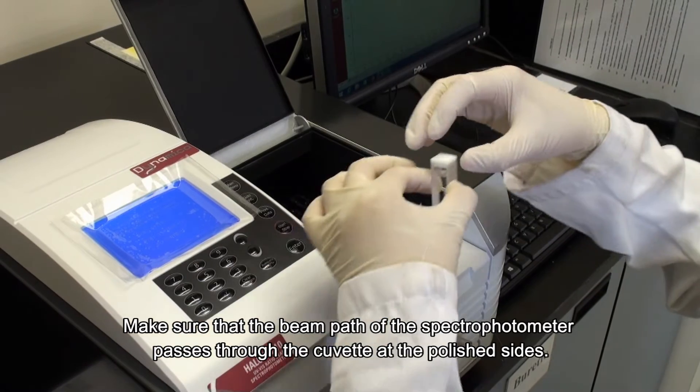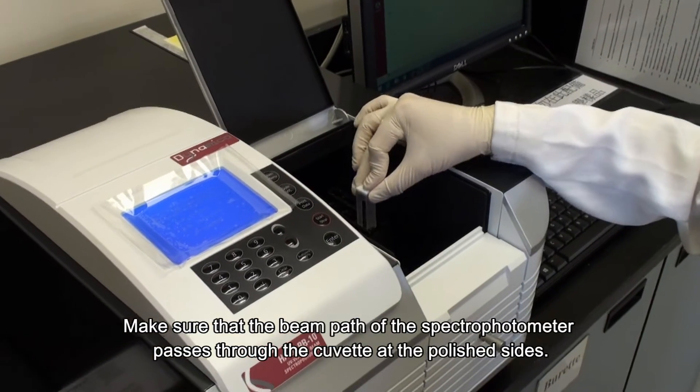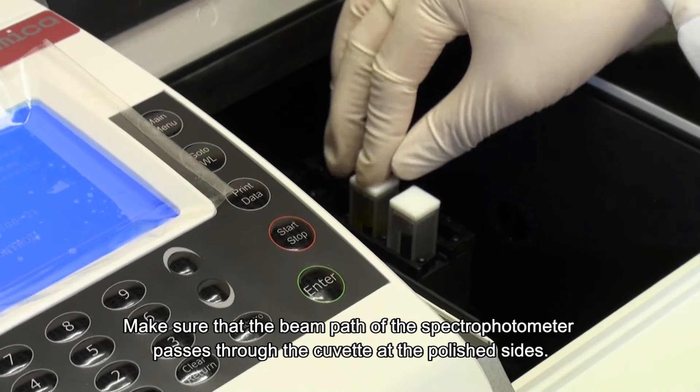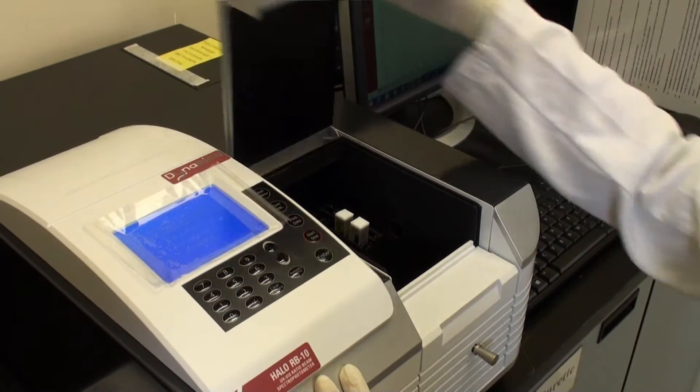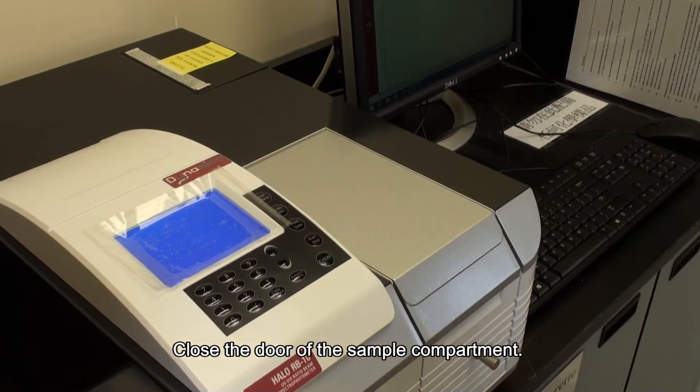Make sure that the beam path of the spectrophotometer passes through the cuvette at the polished sides. Close the door of the sample compartment.